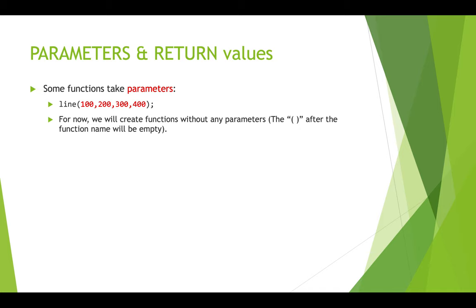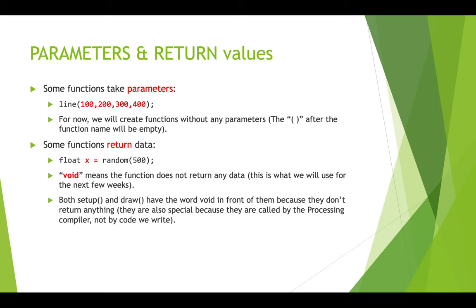For the next little while in our class, we're just going to be creating functions that don't take any parameters, so the brackets at the end of the function name are just empty. Some functions return data — they do a calculation and return the result. For example, next week we'll talk about random, which is a function that gives you back a number between 0 and 500. For functions that don't return any data, they have the keyword void in front of them, which means it's not going to give you anything back. Setup and draw already use void because they don't return anything.